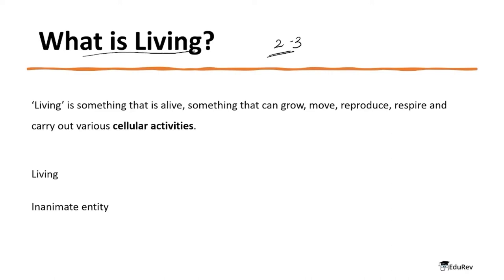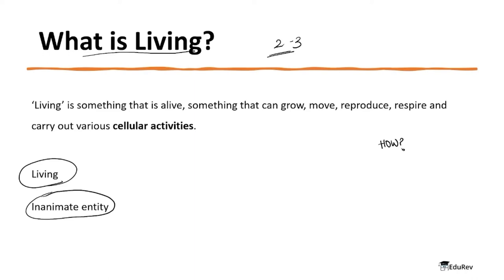Whenever we hear about the topic 'living world,' the first question that pops in our mind is: what is living? How will you assign living or non-living to a thing? Let's say we talk about a table — even a third class student will clearly say a table is non-living and a rabbit is living. But the question is: how do we define living or non-living? In case of living, we always compare it with its opposite, that is the inanimate entity — just a fancy term for non-living.